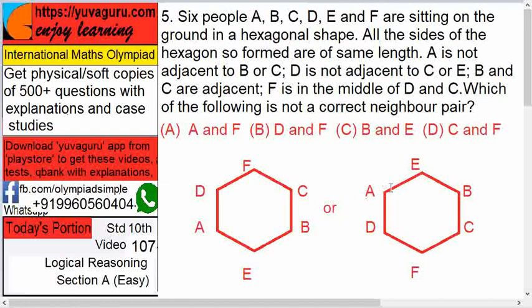So if A is here, who will be in the middle? E will be in the middle, right? So that's why you got both the positions. So which of the following is not a correct neighboring pair? A and F. A and F, they are not neighboring - D is in between here also, here also, right?